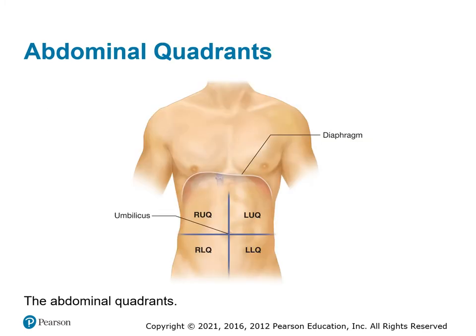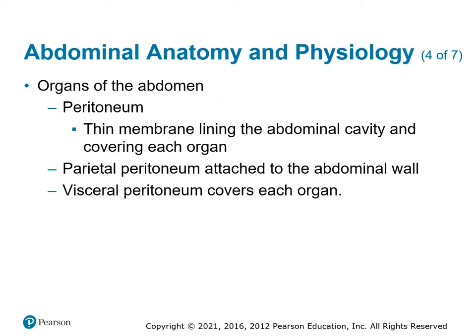Just a reminder on how we divide the quadrants: you've got the diaphragm at the top, pelvis at the bottom, and then the umbilicus as the dividing line for upper/lower and right/left. The organs of the abdominal cavity are held by the peritoneum — that thin membrane that keeps all the pieces together so they don't bounce around.